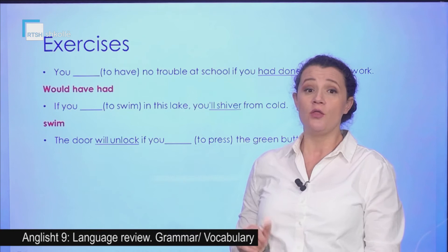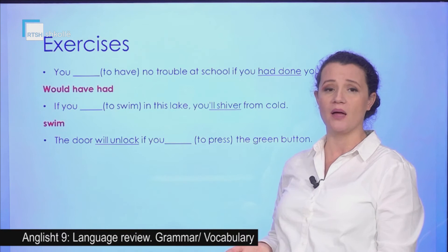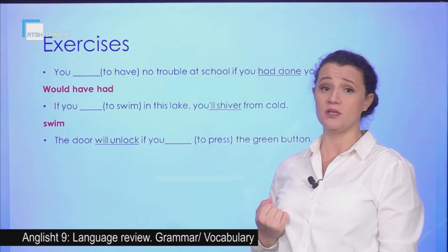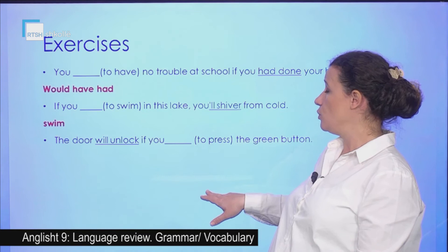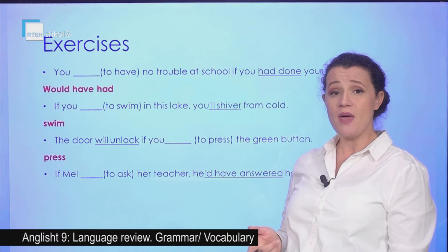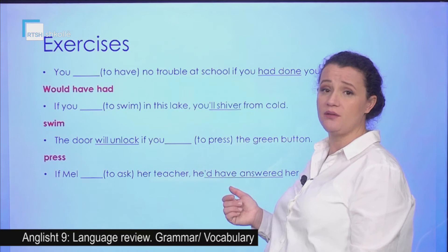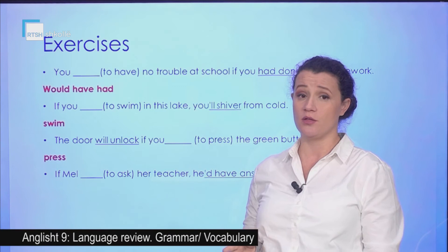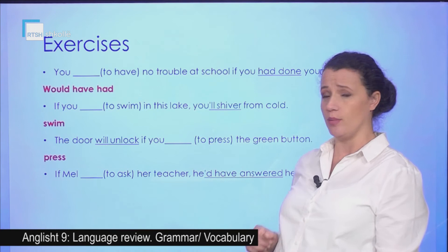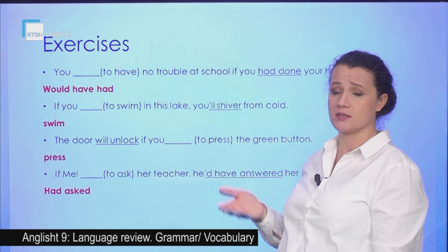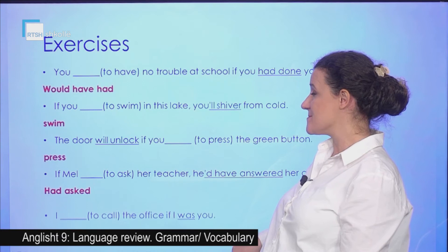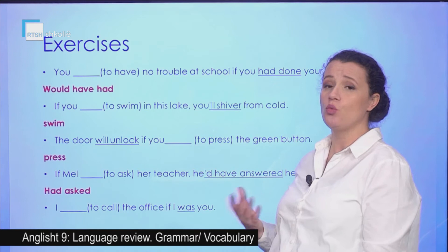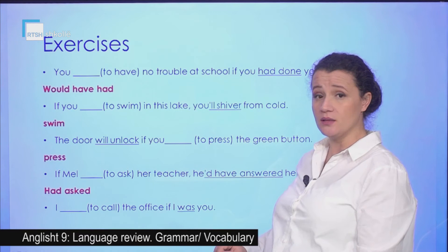The door will unlock if you press the green button — it's the first conditional, will plus a verb in the infinitive. So: if you press — just the present simple — if you press the green button. If Mel had asked her teacher, he would have answered — he'd have answered the question. We are in the third conditional: would plus have plus the past participle. If Mel had asked the teacher, he would have answered. I would call the office if I was you — was is in the past simple, so we are dealing with the second conditional: I would call the office if I was you.